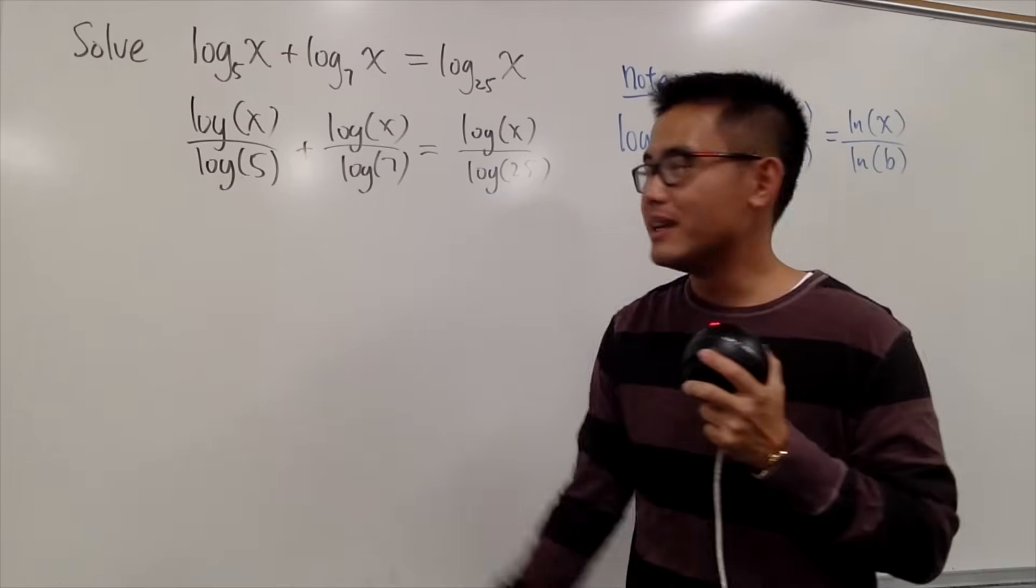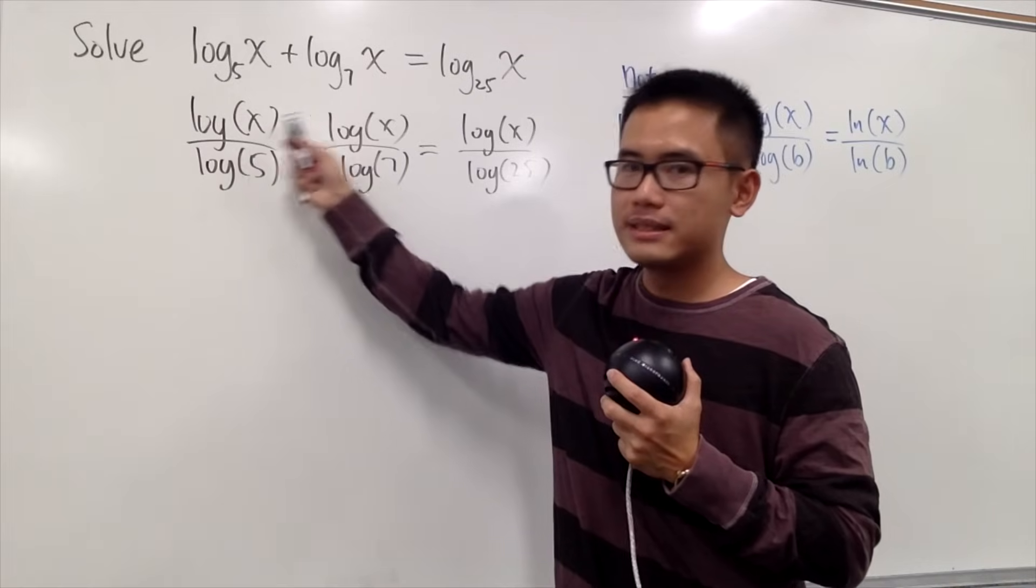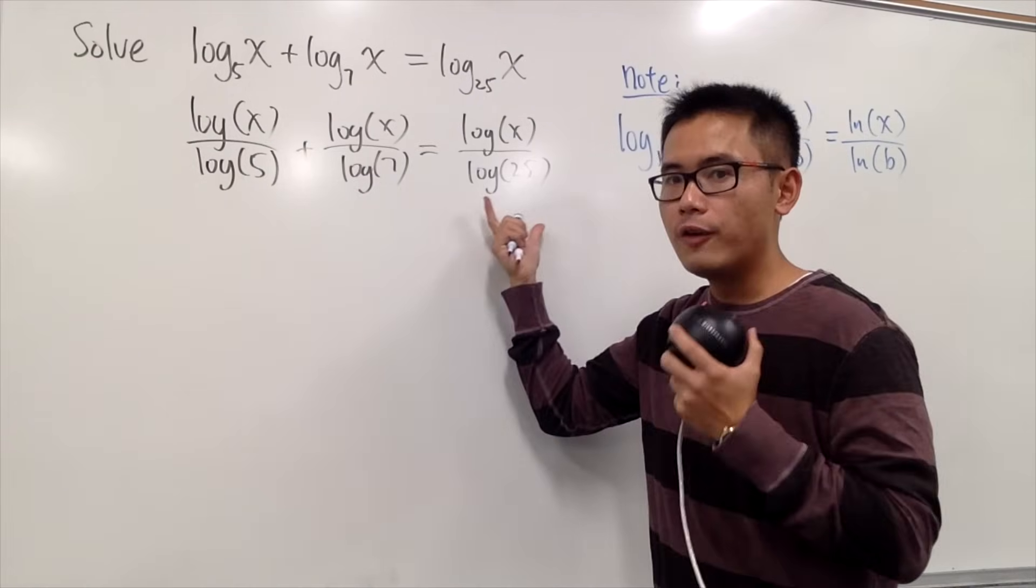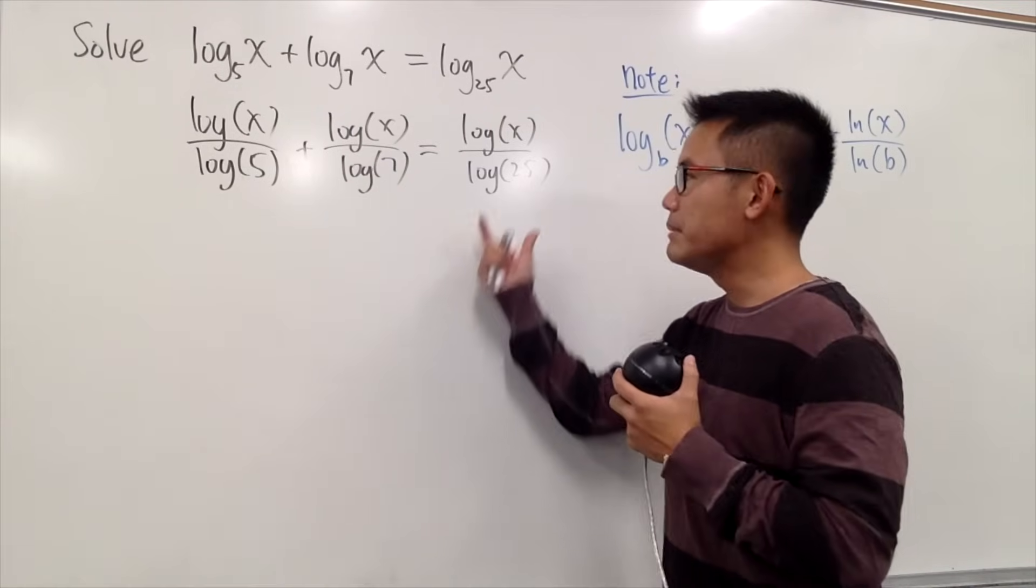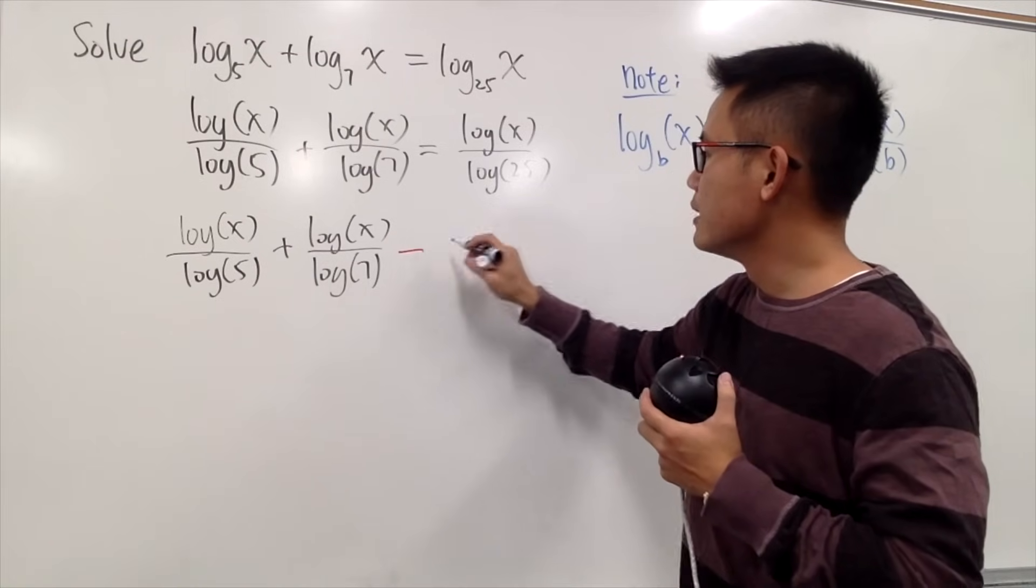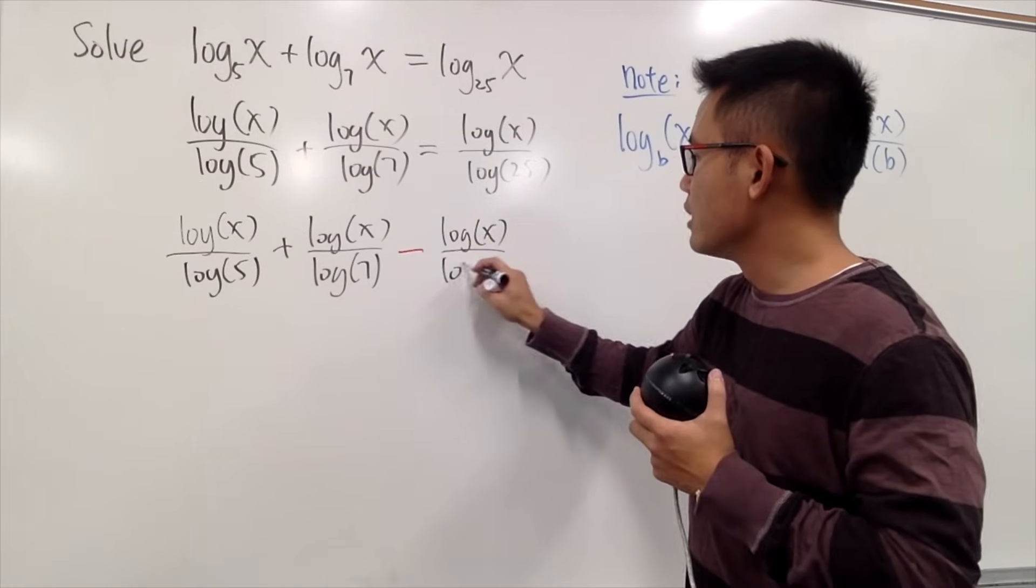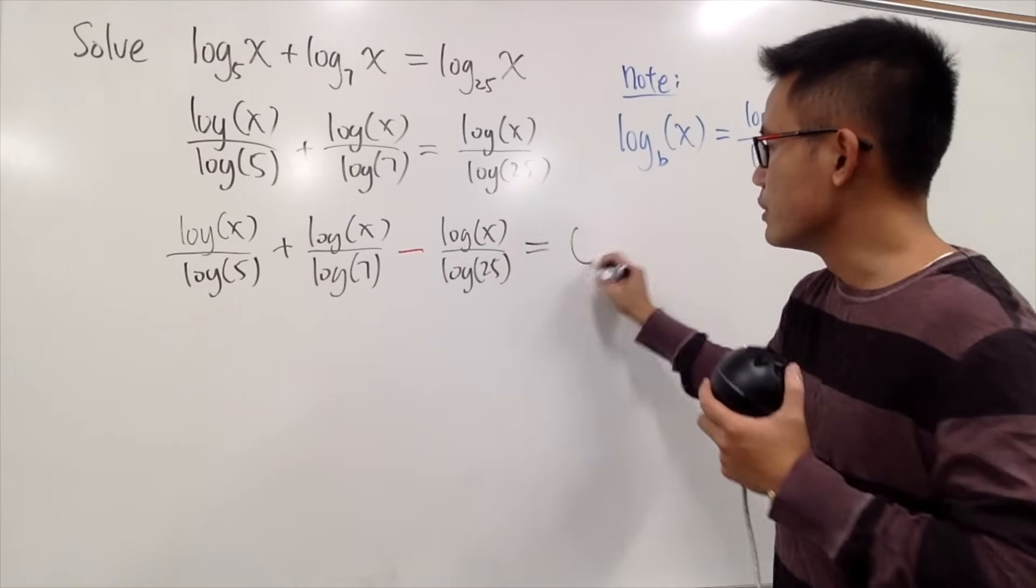And now, as you can see, all of these three terms, they all have a log of x, right? So what we'll do is, we'll move this from the right to the left, and then we'll factor out the log of x. But let me move this for you guys first. It becomes negative, right? So we have minus log of x over log of 25, and all this is equal to 0.